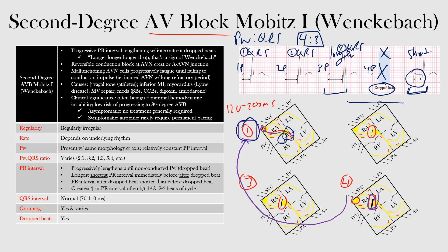Remember the mitral valve is between the left atrium and left ventricle, so people who have mitral valve surgery can have this area affected. Medications can also cause it: beta blockers, calcium channel blockers, digoxin, and amiodarone.